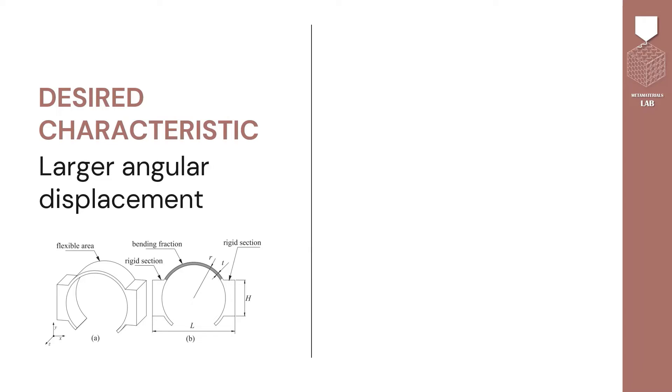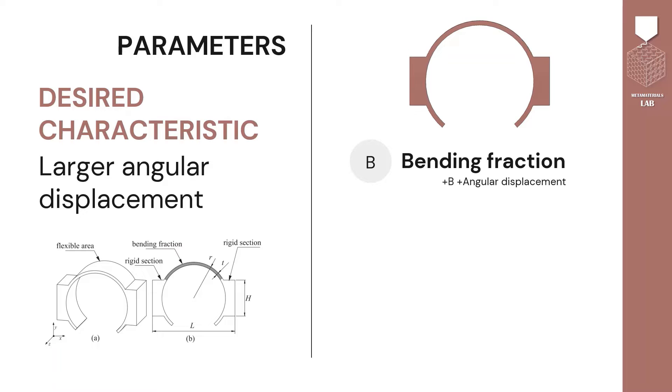The characteristic I am aiming to achieve is a larger angular displacement. I define some parameters and start varying them. Considering that the elastic deformation occurs at the ring, I vary the fraction of the circumference between the rigid parts, a.k.a. the bending fraction.